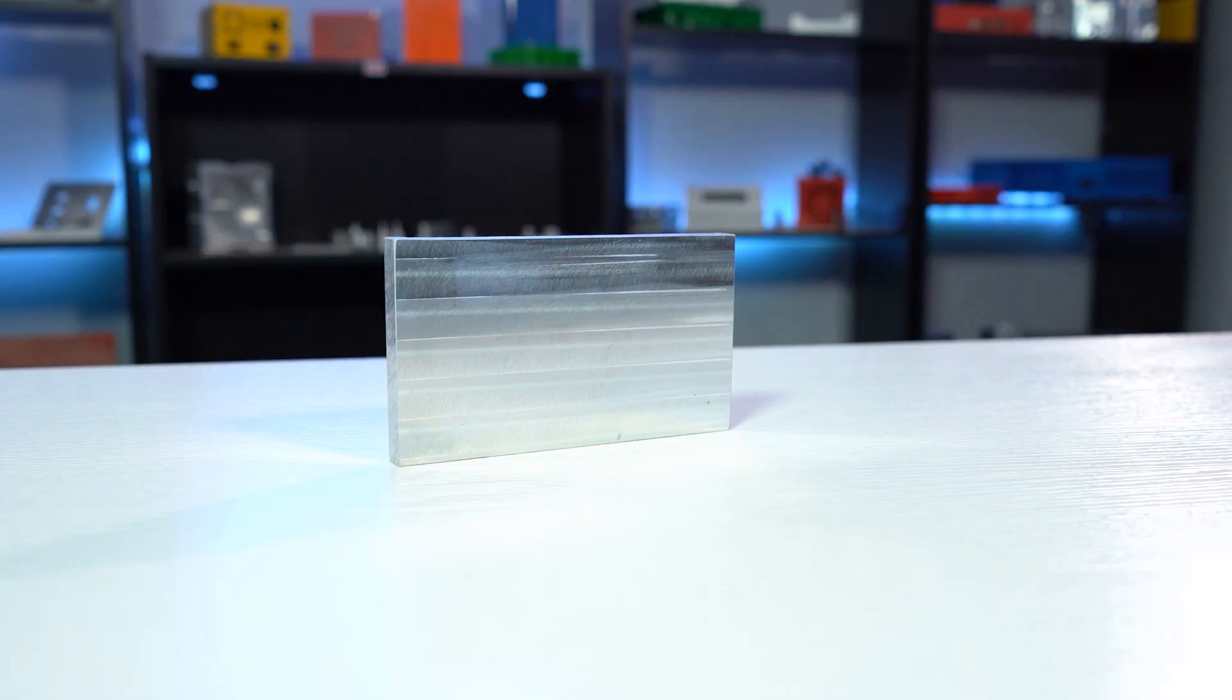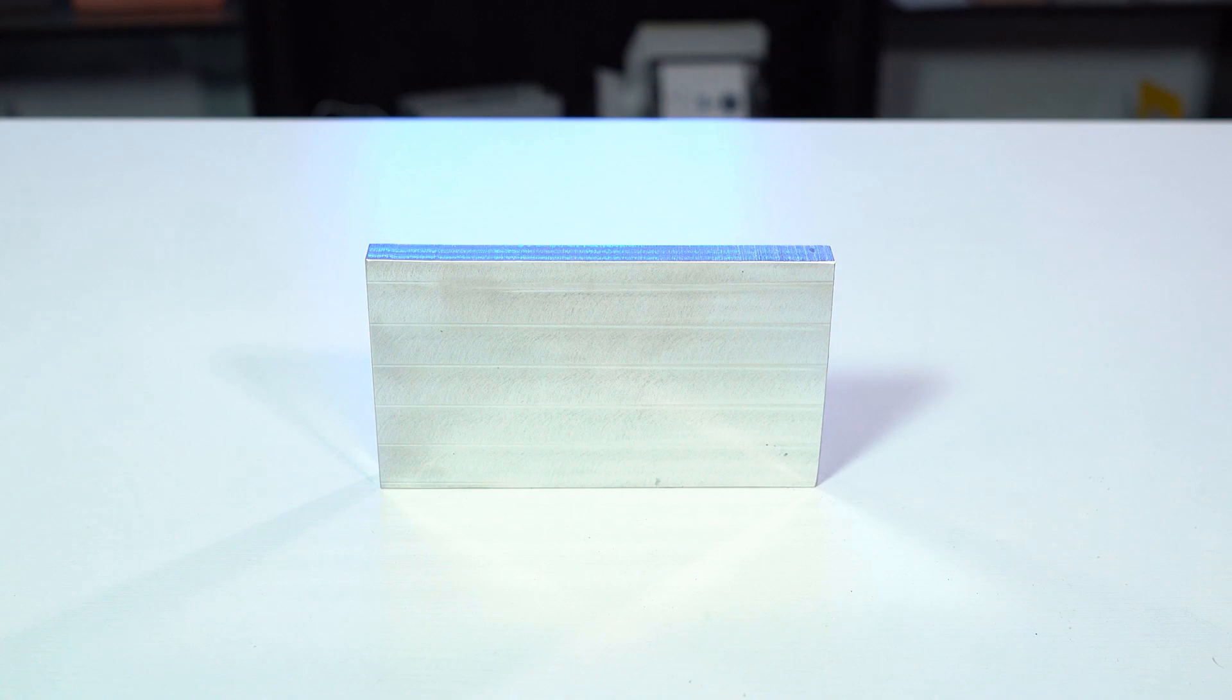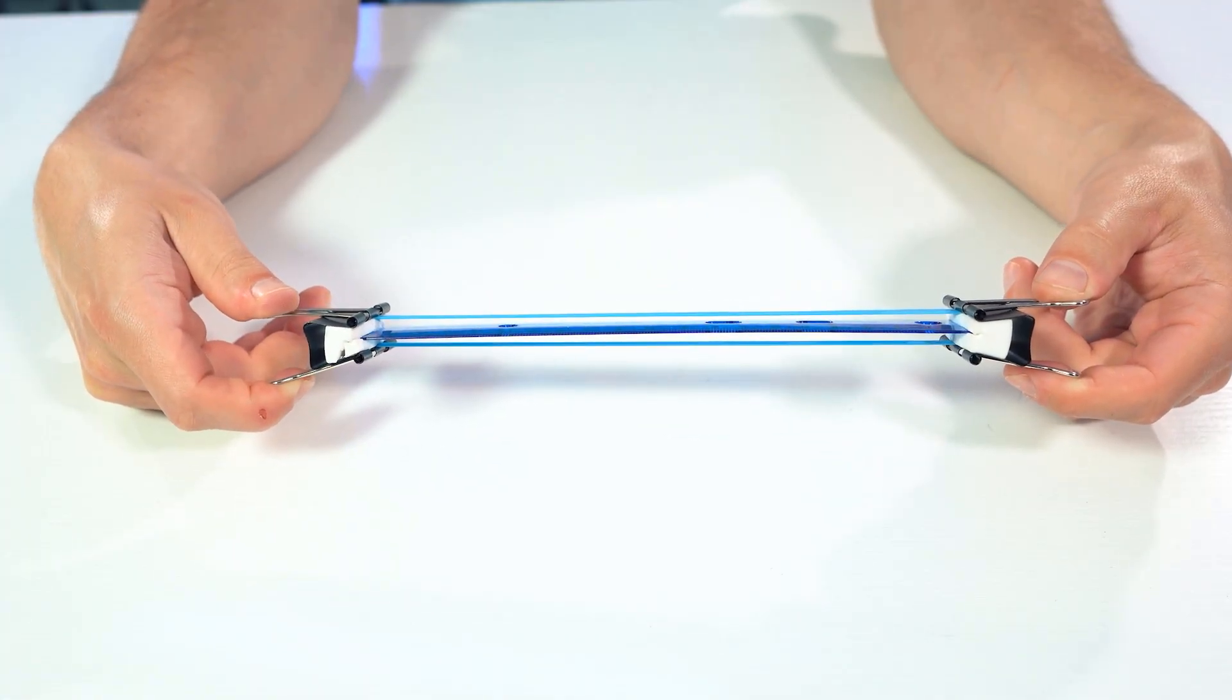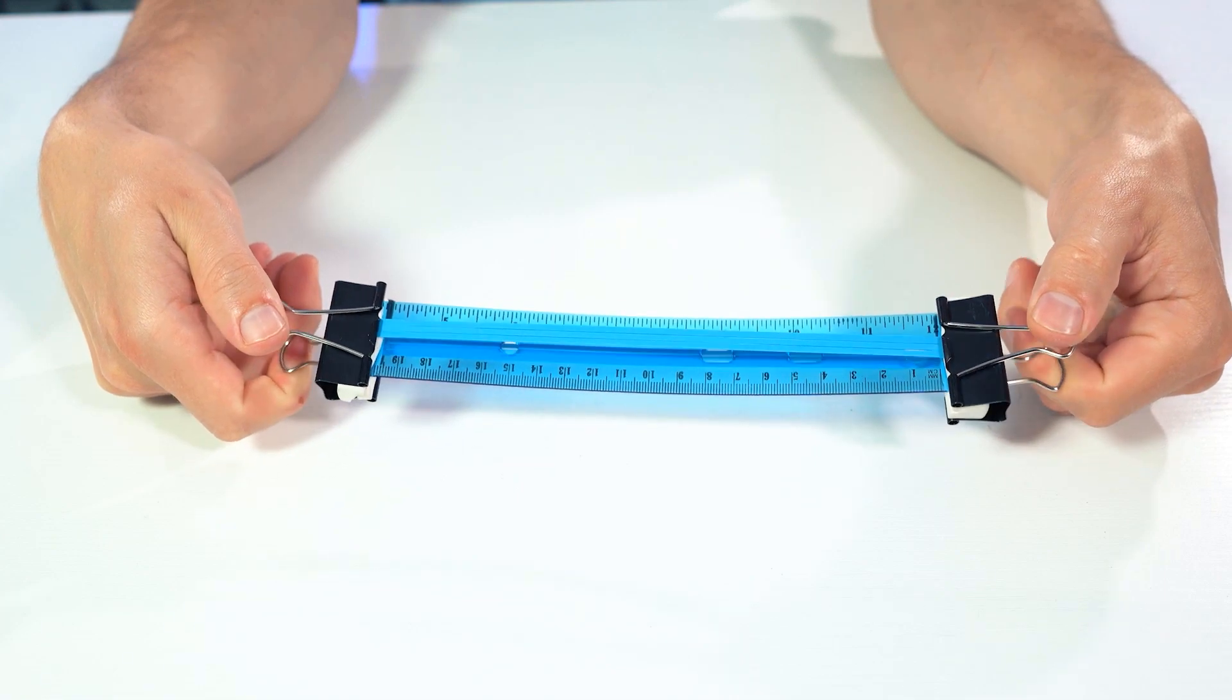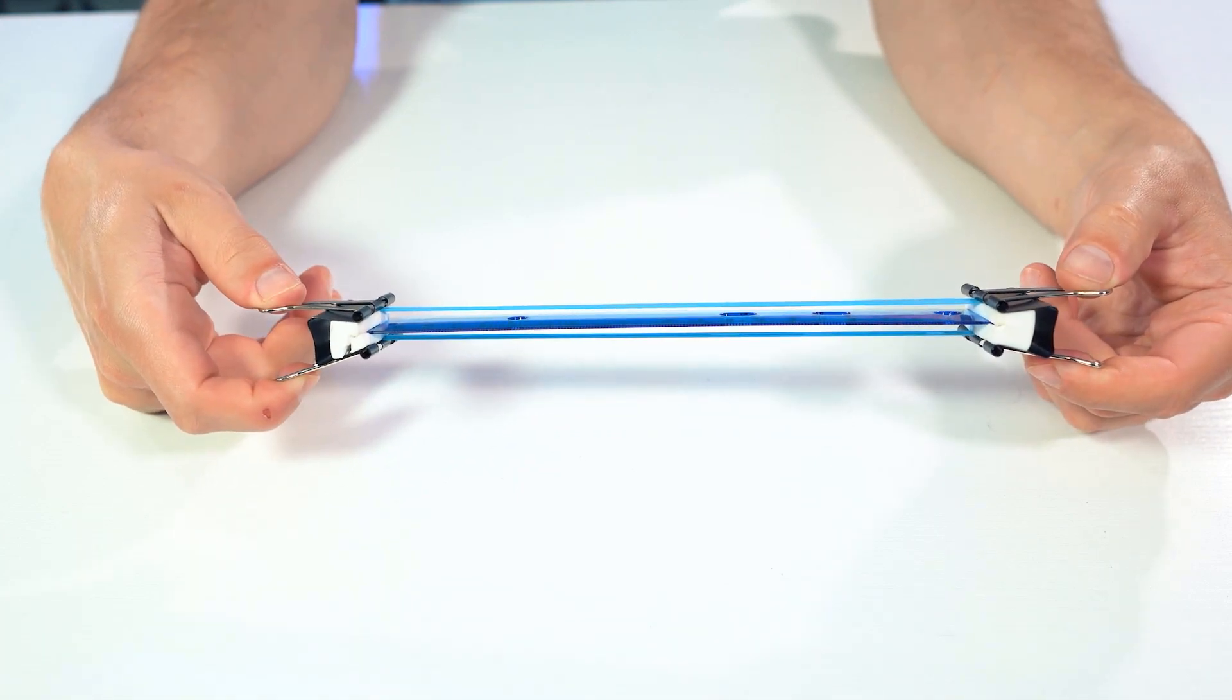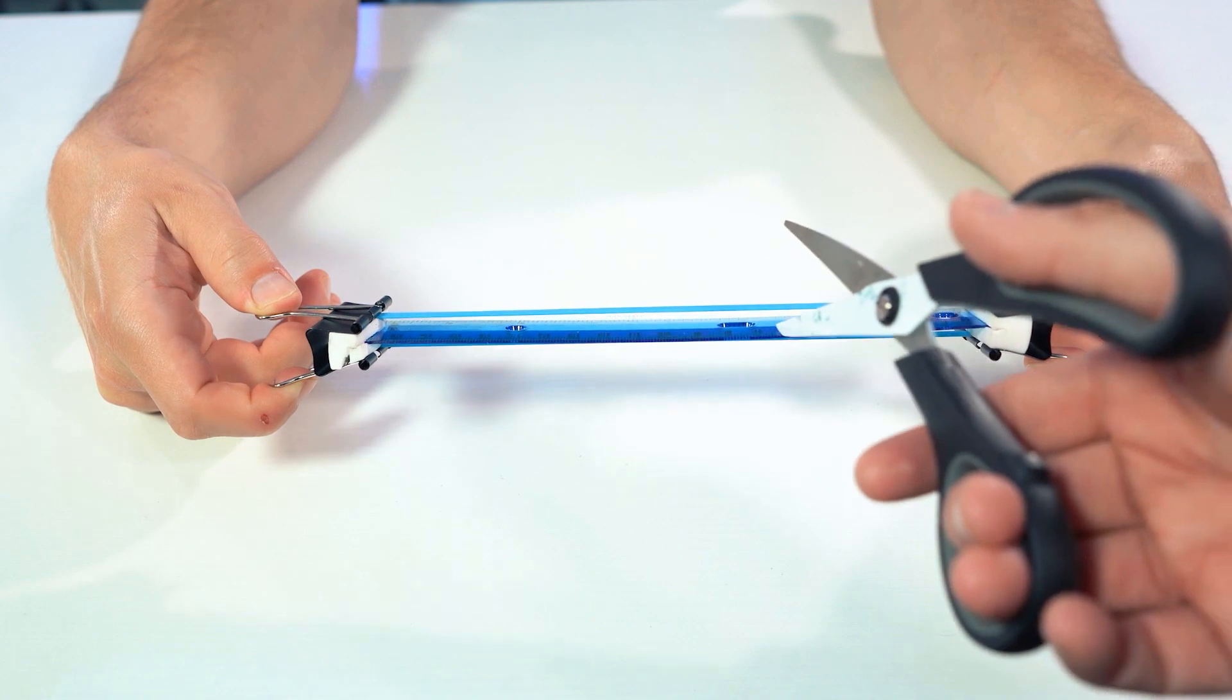MIC6, on the other hand, is an aluminum alloy that is cast and stress relieved. This means that the internal stresses in the material become misaligned. If the material is removed from one side, it won't cause a larger imbalance in the internal stresses. We illustrate this concept more in our ProtoTech tip on MIC6, which we've linked in the description below.